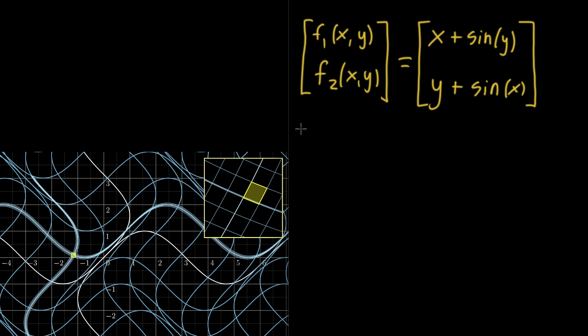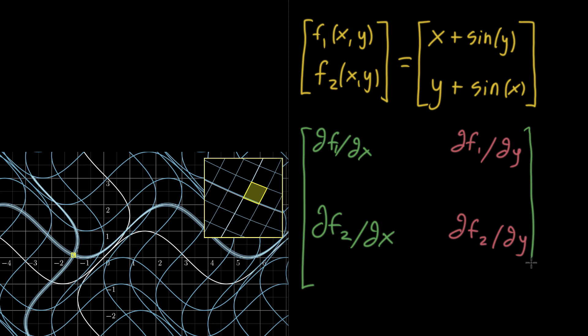It is this thing that holds all of the partial differential information. You take the partial derivative of f1 of that first component with respect to x, and then the partial derivative of the second component with respect to x. And then on the other column, we have the partial derivative of that first component with respect to y, and then close off this matrix.